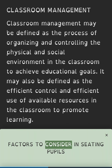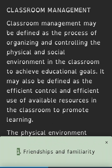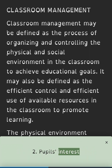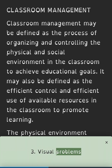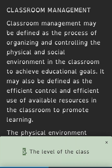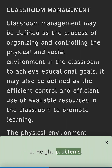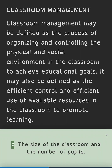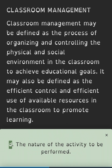Factors to consider in seating pupils: friendships and familiarity; pupils' interest; visual problems; auditory problems; the level of the class. Other factors include: height problems; the nature of the furniture; the size of the classroom and the number of pupils; and the nature of the activity to be performed.